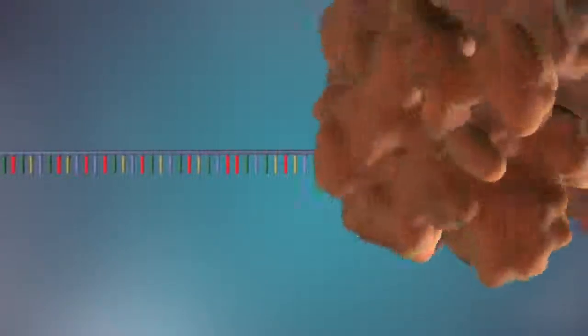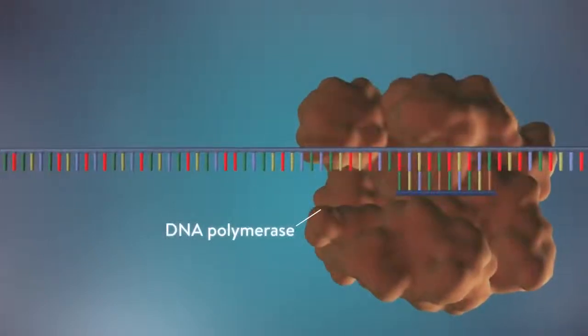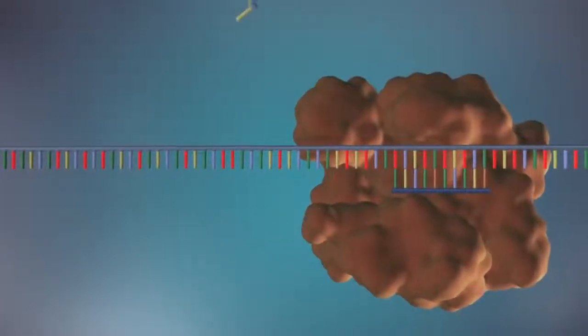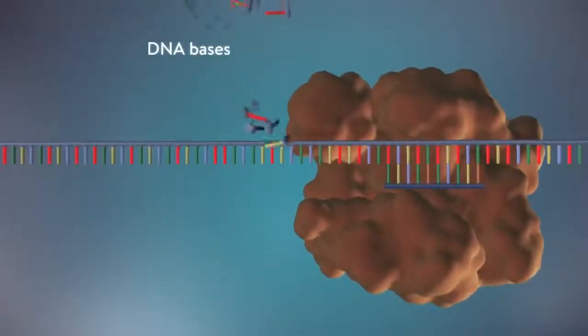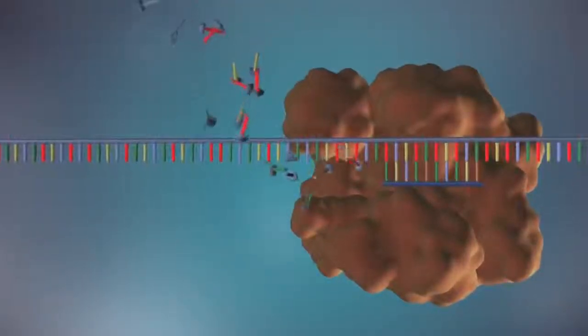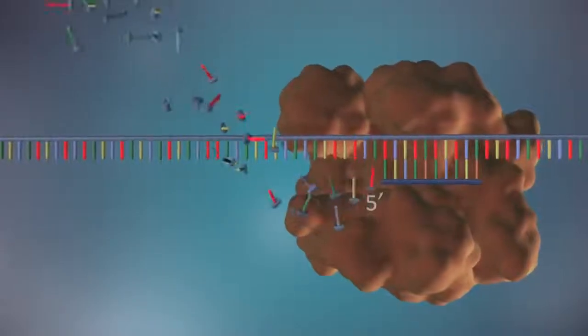An enzyme called DNA polymerase binds to the primer and will make the new strand of DNA. DNA polymerase can only add DNA bases in one direction, from the five prime end to the three prime end.